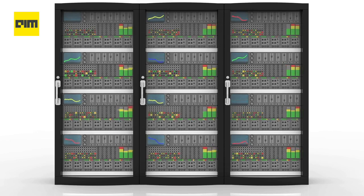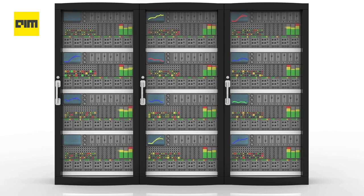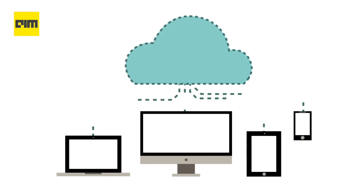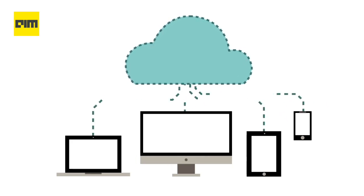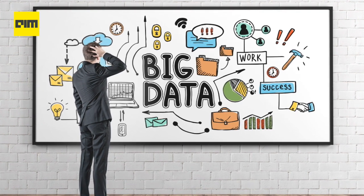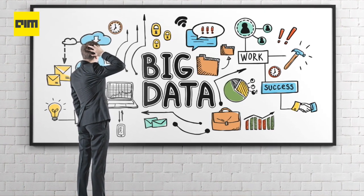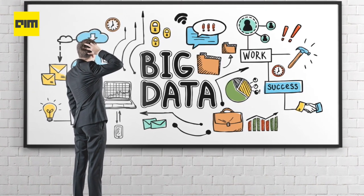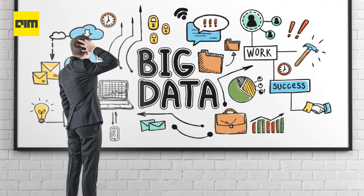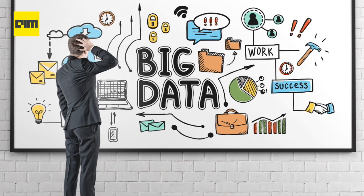Nearly all companies and even individuals store data that they will never access again, just because cloud storage is now cheap and available to everyone. A substantial part of big data is unstructured, but at least some is accessible, while the vast majority is simply hidden altogether — unseen and unused. This is exactly what we call dark data.